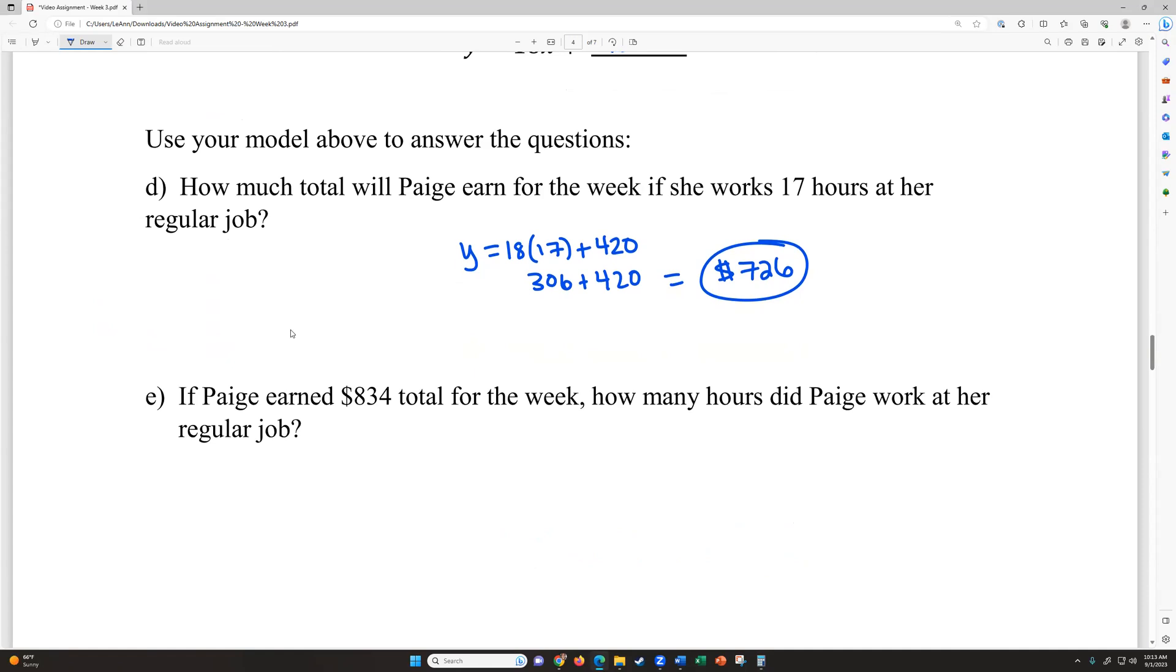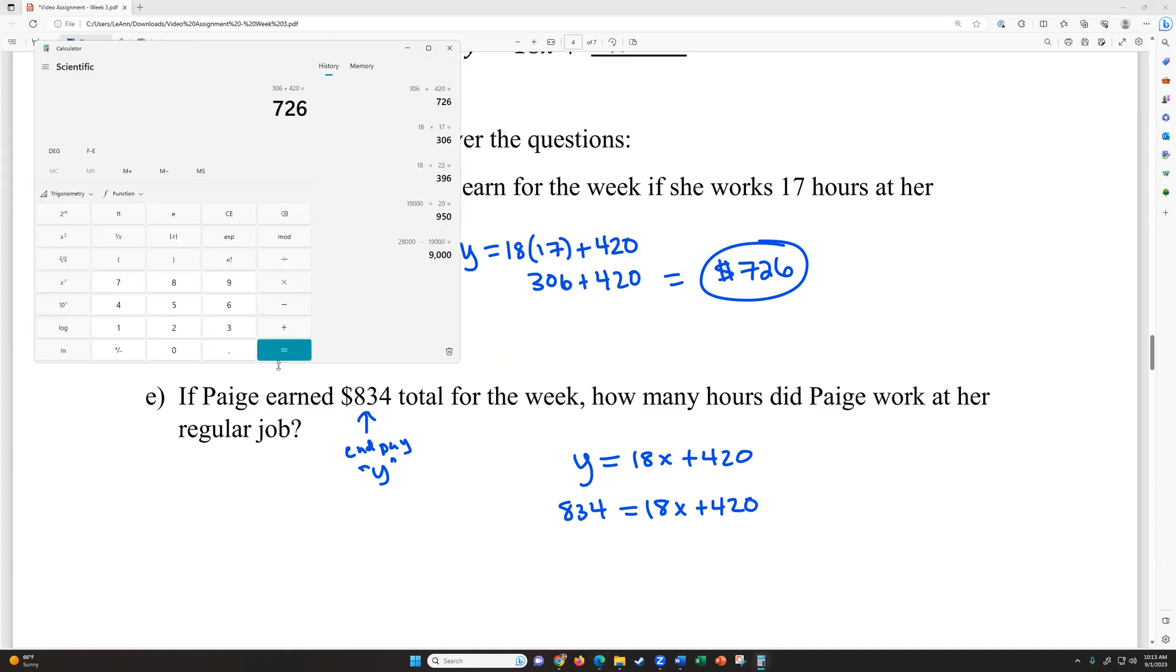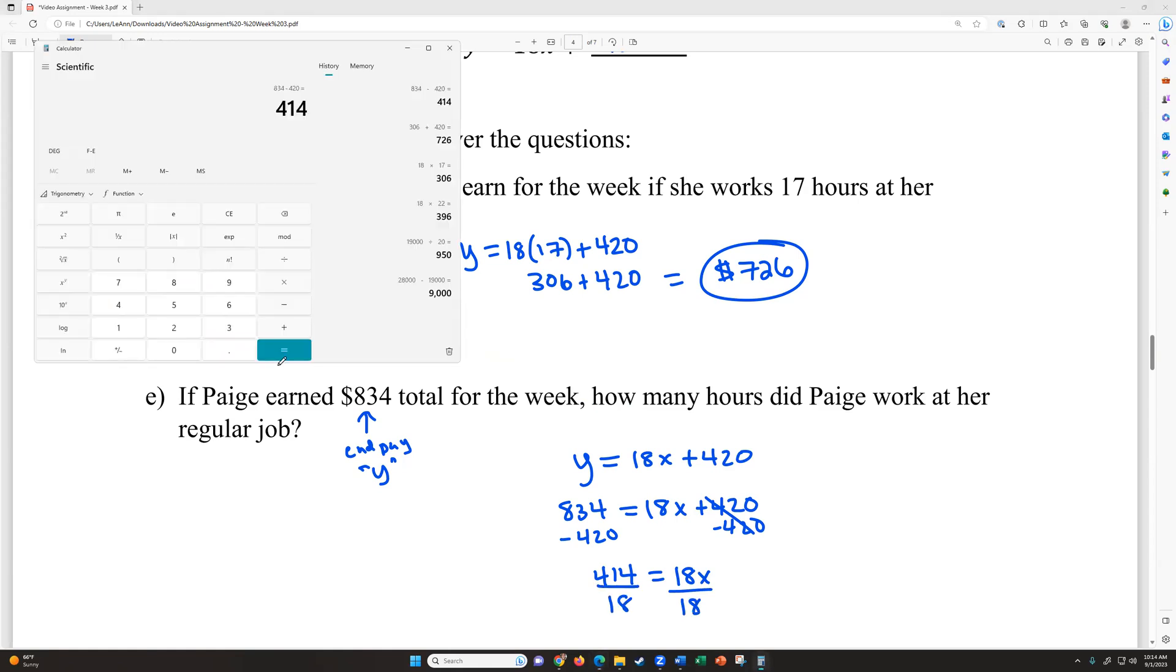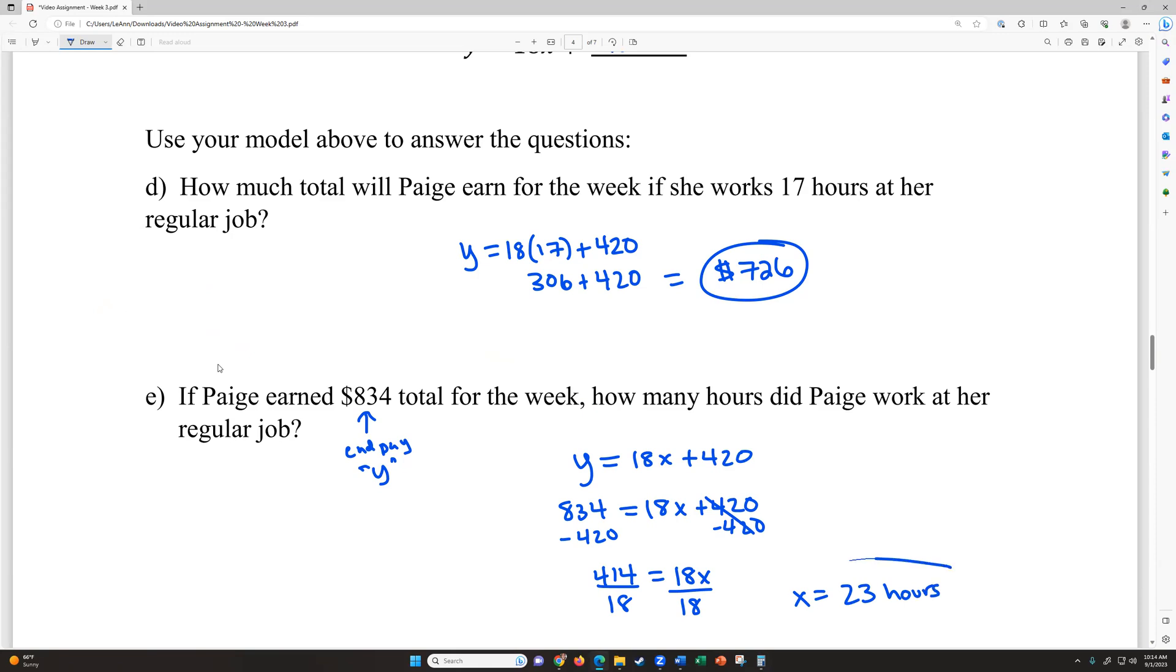If Paige earns $834 total for that week, how many hours did she work at her regular job? This is different. This is her end pay. So that's that y, because x was hours, y was total of what she was going to get paid. So we're going to write our formula again, y equals 18x plus the $420. And this time we're going to swap in and put the $834 in for what she's going to get paid. Now we know that she already got $420 at the other job. So if we subtract that over, that'll help us know how much she earned at her regular job. So if we subtract that over from both sides, it'll cancel on this side. And then we'll be left with $414 equals 18x. And this is just like when we were solving proportions. We divide by the one that's next to our x. So she worked 23 hours, not money, because we're solving for x this time.